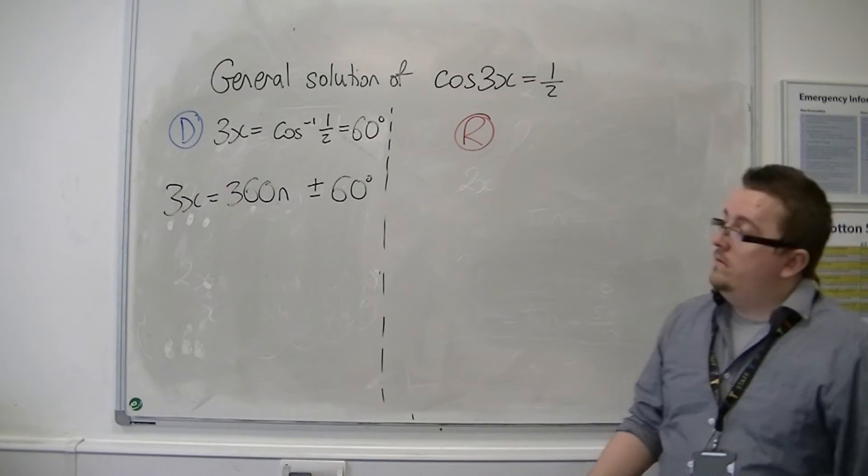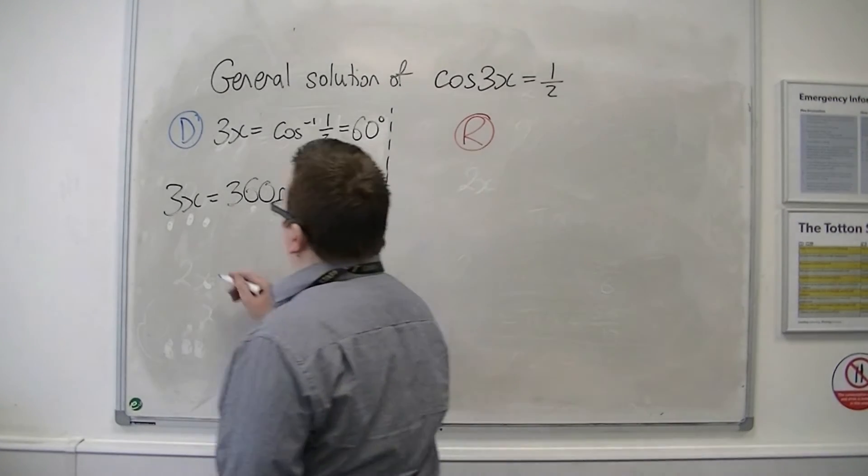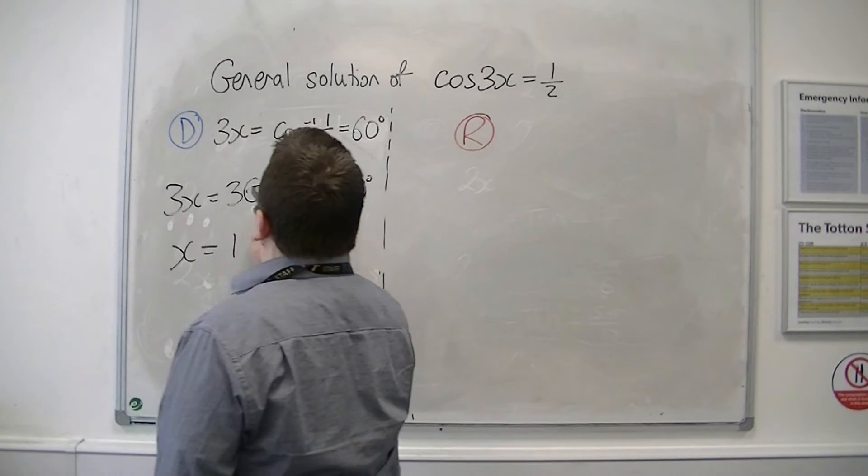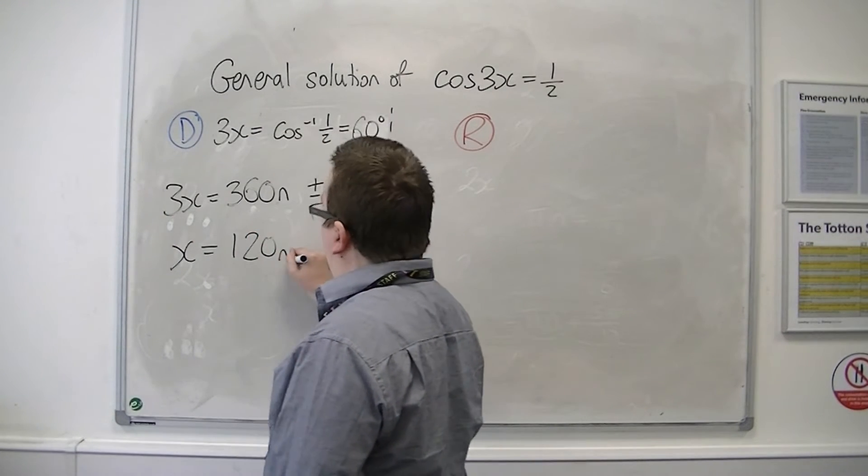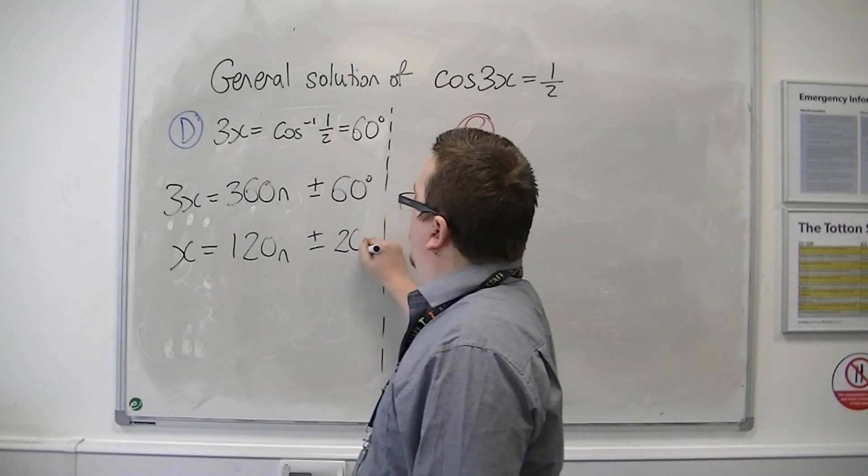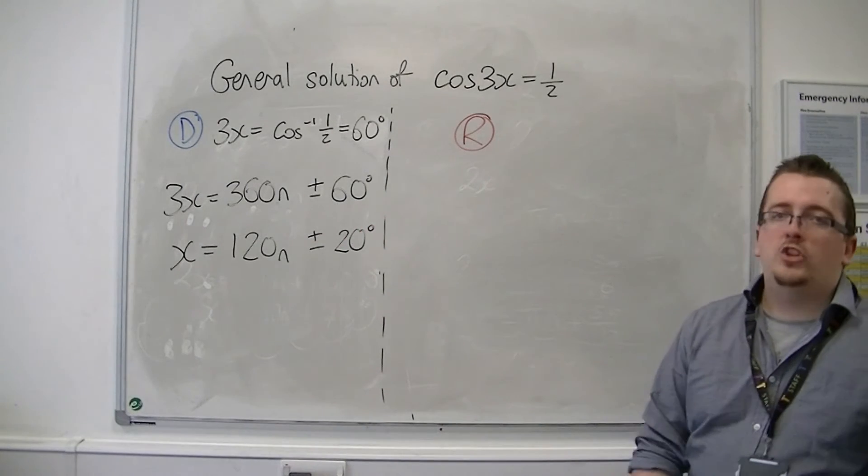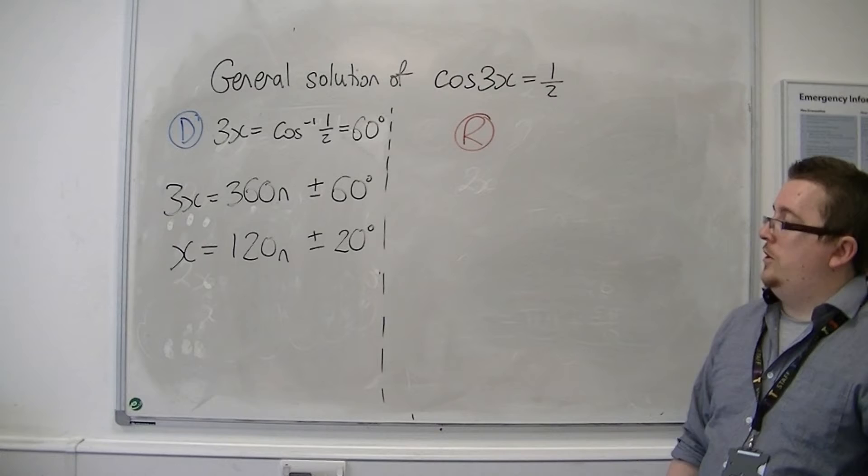So then we just divide through by 3. So x is equal to 120n plus or minus 20. And that's my general solution in degrees.